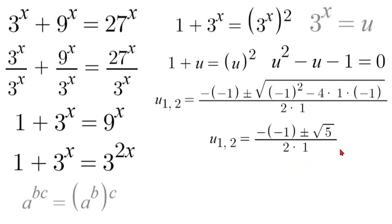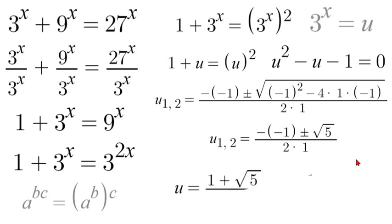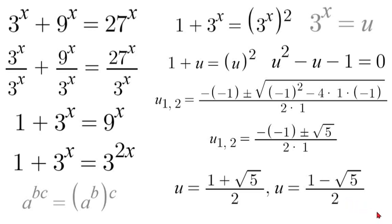Simplifying one step further, we end up with two answers: u equals 1 plus square root of 5 over 2, and u equals 1 minus square root of 5 over 2.